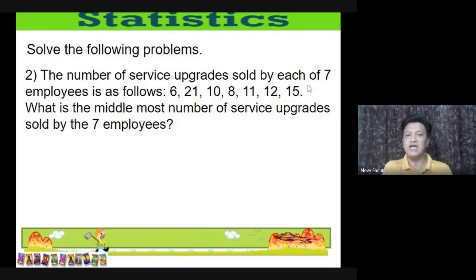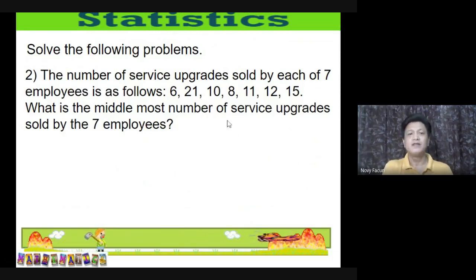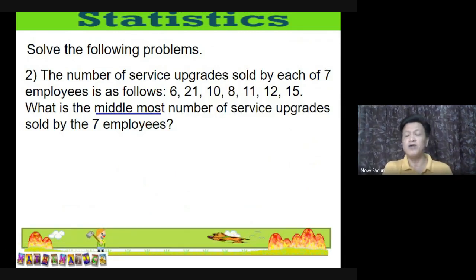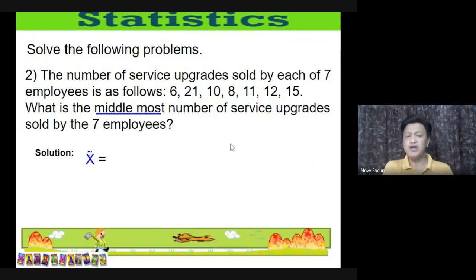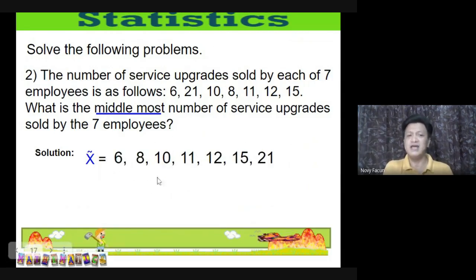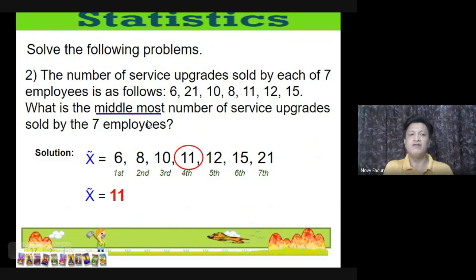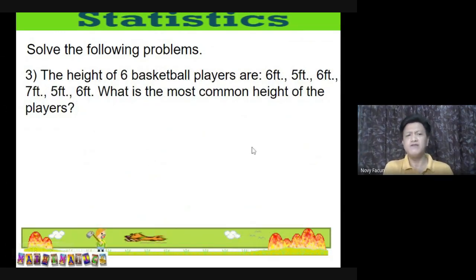Problem 2: The number of service upgrades sold by each of seven employees is: 6, 2, 1, 10, 8, 11, 12, 15. What is the middlemost number of service upgrades sold? The word 'middlemost' means median. Since there are 7 observations (odd), apply Case 1. Arrange the data in ascending order; the 4th term is 11. Therefore, the median is 11.